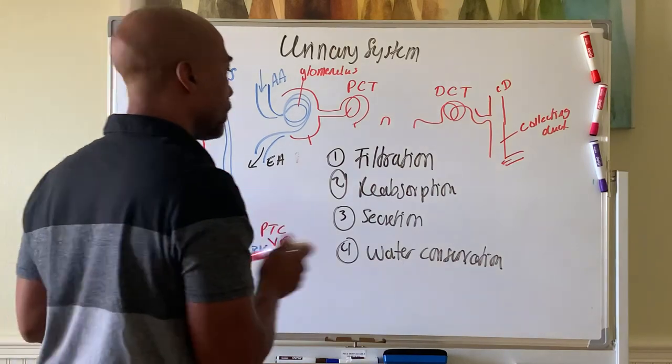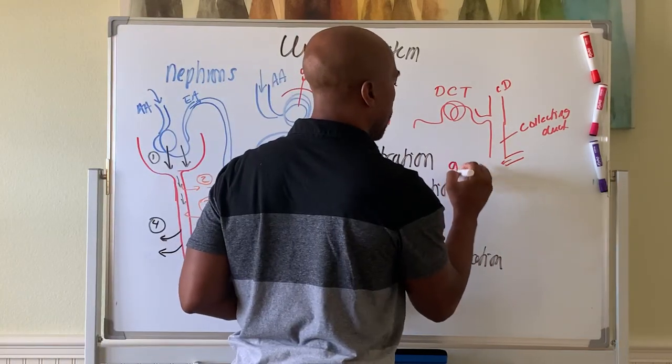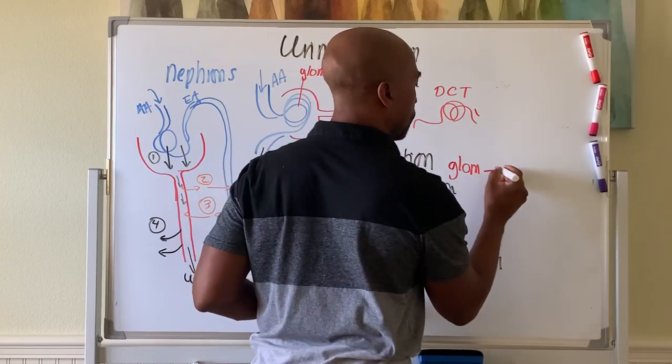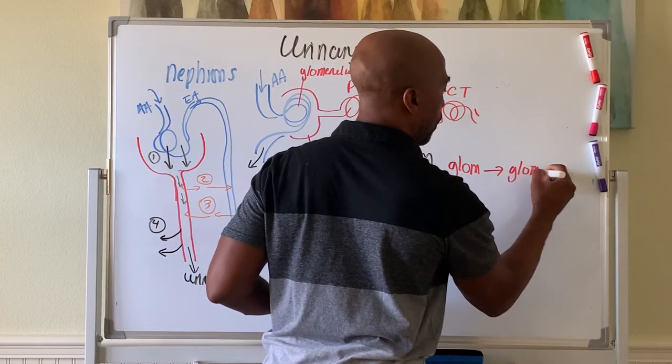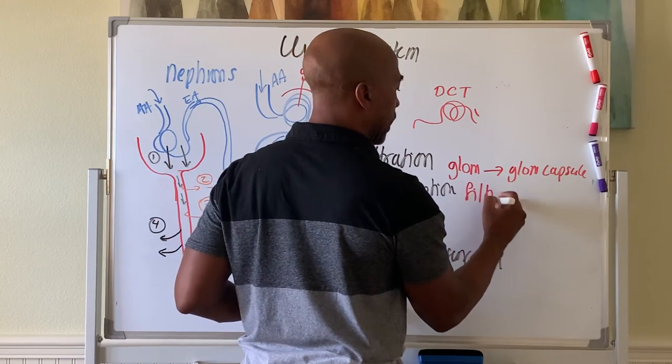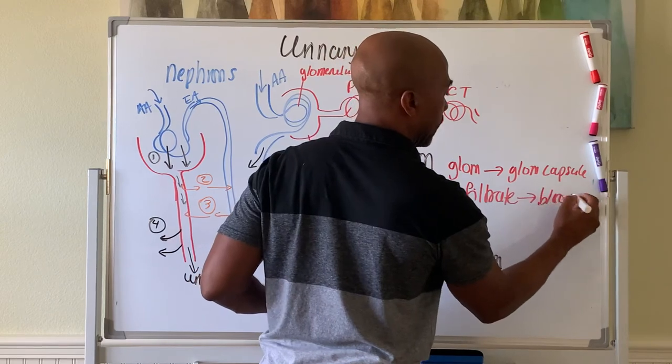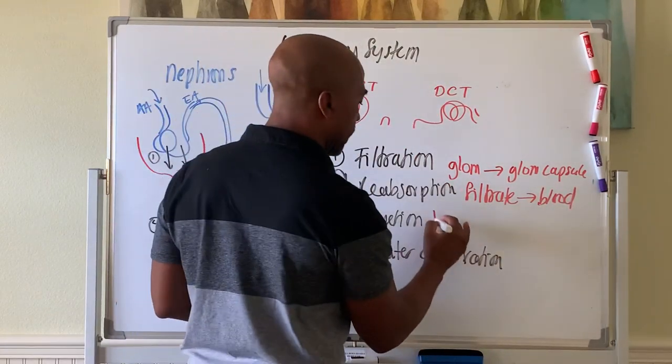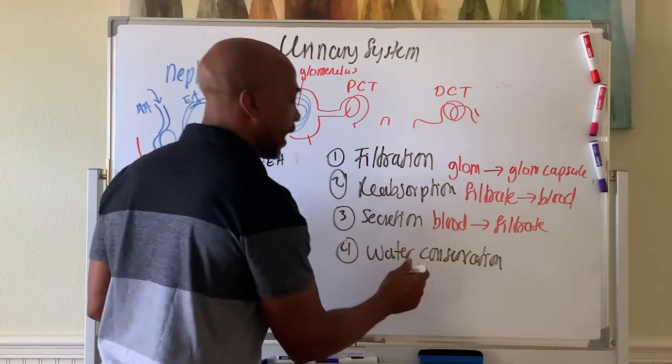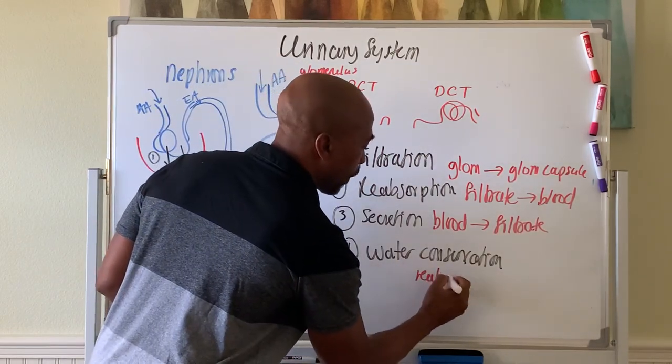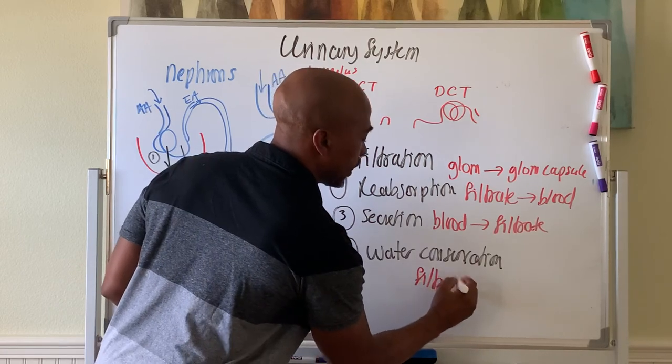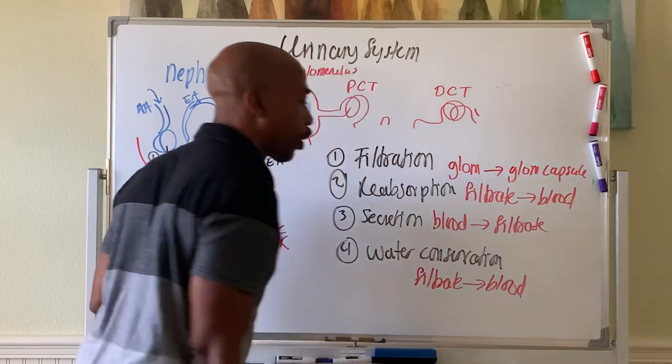So just again, filtration is moving stuff from glomerulus into the glomerular capsule. Step two, reabsorption is moving stuff from filtrate, filtrate back into blood. Secretion is moving stuff from blood back into filtrate. And the water conservation is done by reabsorbing water. Reabsorbing water. So here is basically water going from filtrate to blood. That's water conservation.